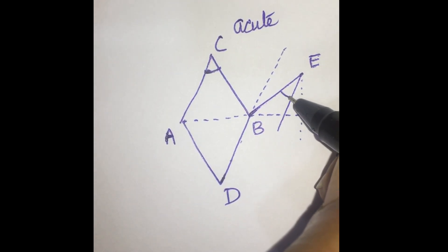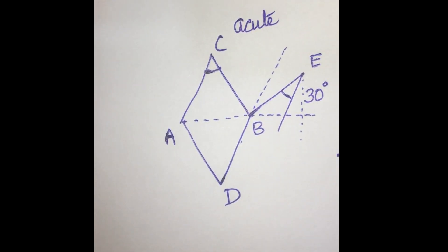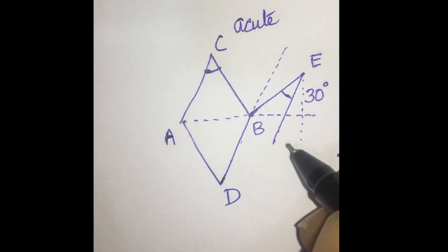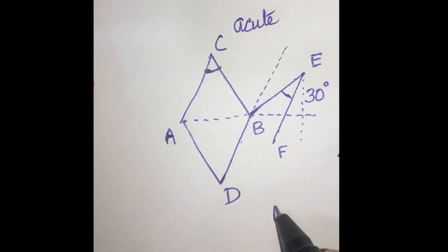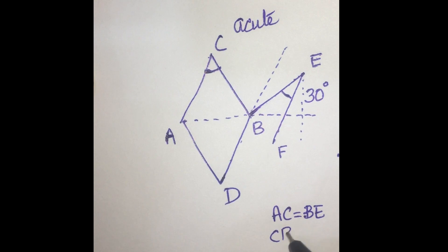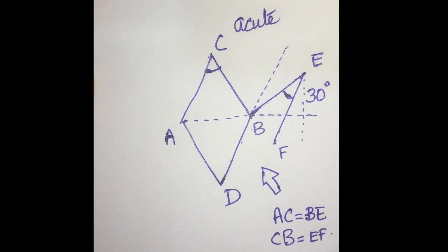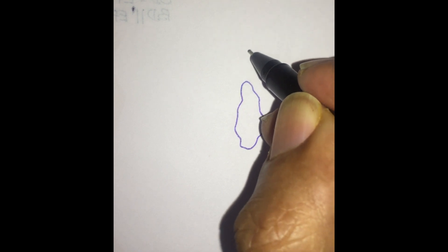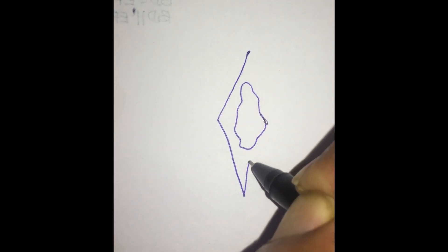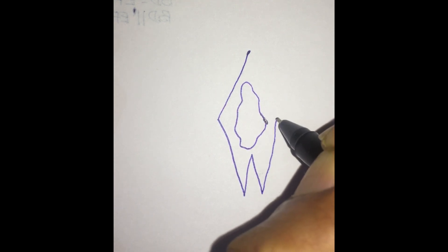But here, in the Webster 30-degree angle flap, a line is marked at a 30-degree angle for a length equal to CB. So this line EF is equal to CB. The line AC is equal to the length of the line BE, and the length of the line EF is equal to the length of the line CB. This flap DBEF moves such that DB is switched to AD and the angle E is switched to the angle C. The modification of the Webster 30-degree angle flap is done with M-plasty. When there is a lesion and the rhomboid is being marked as the defect, a small modification is incorporated — an M is incorporated over here — and then the rhomboid is formed.